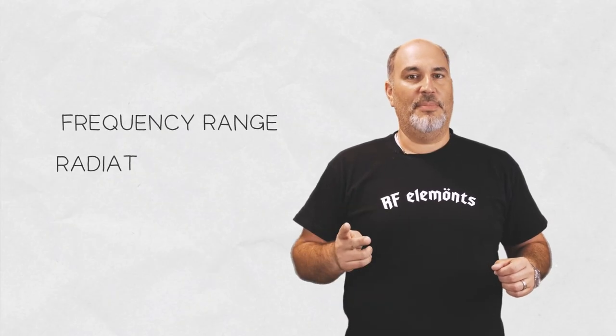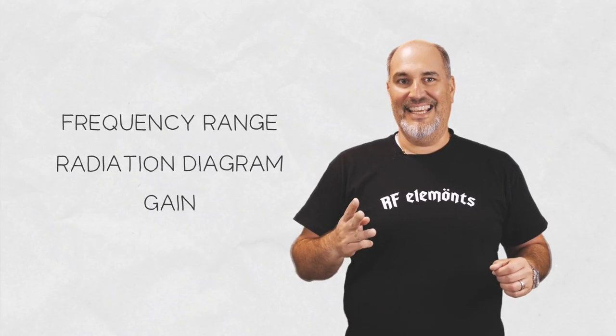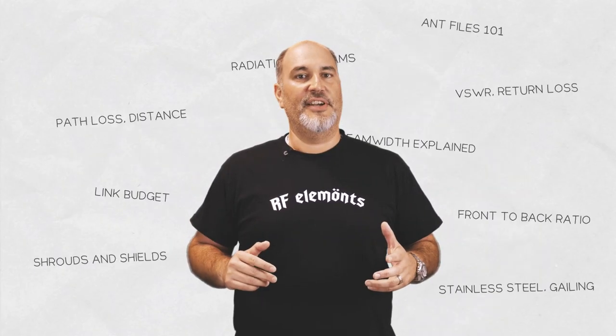The main parameters of an antenna are the frequency range, the shape of its radiation pattern, and its gain. We'll talk about some of these topics in our next video.